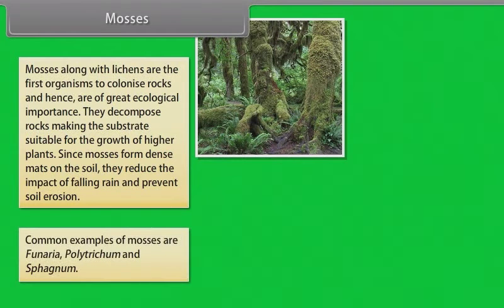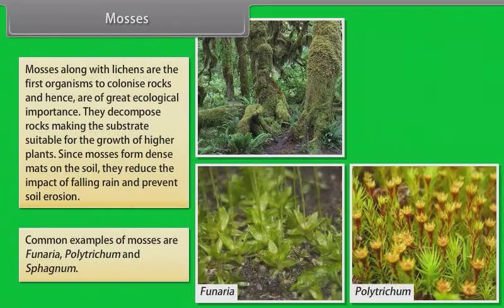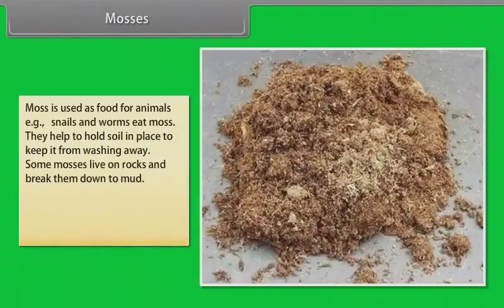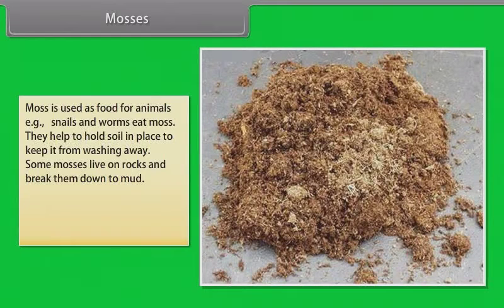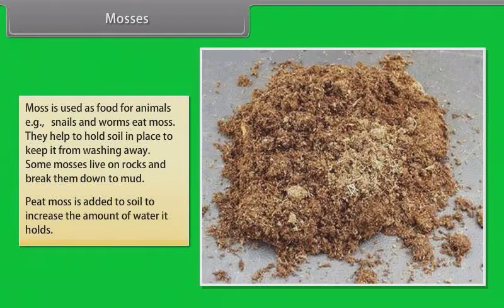Common examples of mosses are Funaria, Polytrichum and Sphagnum. Moss is used as food for animals, that is snails and worms eat moss. They help to hold soil in place to keep it from washing away. Some mosses live on rocks and break them down to mud. Peat moss is added to soil to increase the amount of water it holds.